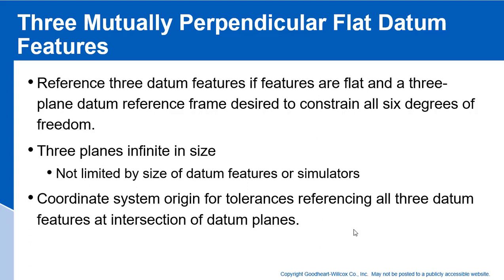When three mutually perpendicular flat datum features are used, you reference these three datum features — if features are flat and a three-plane datum reference system is desired — to constrain all six degrees of freedom. Note that the three planes are infinite in size, not limited by the size of the datum features or the simulators. The coordinate system origin for the tolerances references all three datums at the intersection of these datum planes.